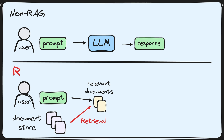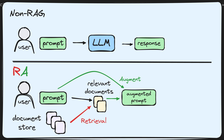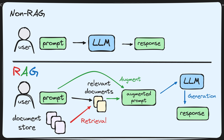Then we move on to the augmentation step, where we augment the user's query with these relevant documents and tell the LLM it needs to pay attention to these documents when generating its response. From there, it's the same as the non-RAG solution — we pass this augmented query into the LLM, into ChatGPT, and have it generate a hopefully better response.